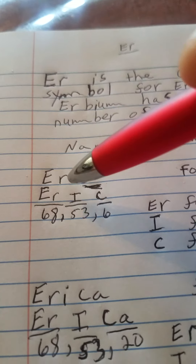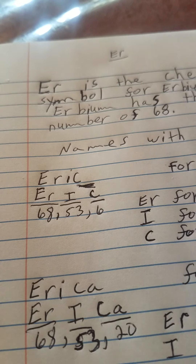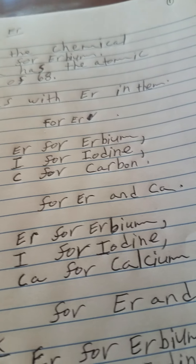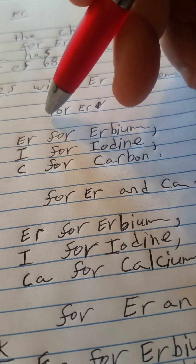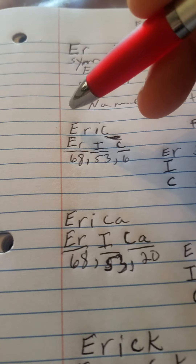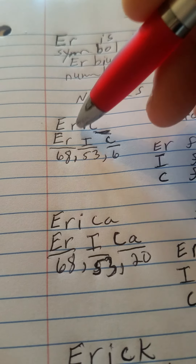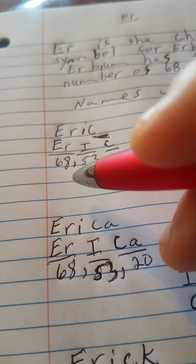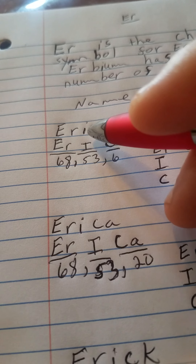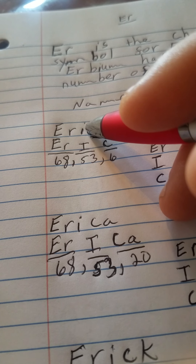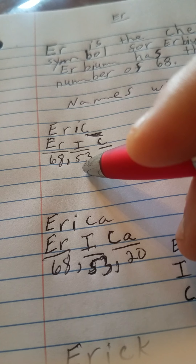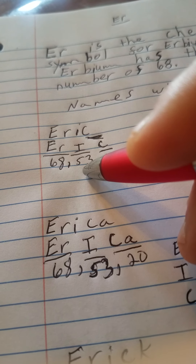Let's take ER now. How about the ER from the name Eric? Capital E-R-I-C — we're looking for ER, and ER is Eric. You know that capital E-R is for erbium, atomic number 68. Then we have a capital I — I made a capital I and I put 53 as the atomic number for iodine.